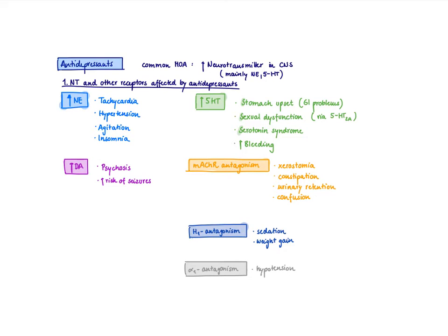The good news is that just by knowing a couple of basic facts about each neurotransmitter, you can predict a lot of the side effects of antidepressants. Before we get started and go into the different classes, I want to generally talk about what happens if you increase a specific neurotransmitter, because these effects are what you're going to see as adverse effects in specific antidepressant medications.